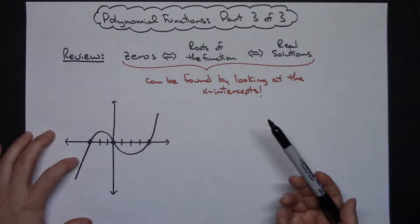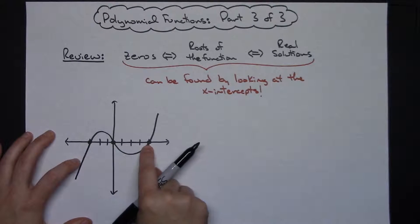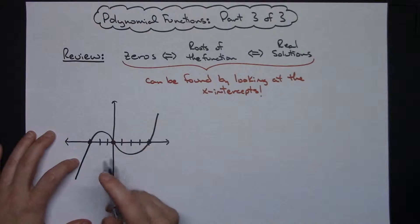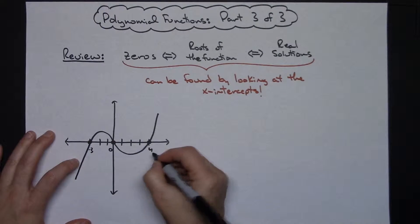If you had access to a graphing calculator you could also just take your equation and put it into your graphing calculator and find it that way as well. But this clearly has three zeros, three roots, three solutions. This one goes through negative three, goes through zero, and then goes through four.